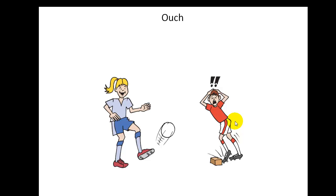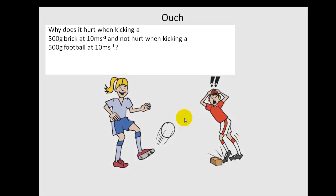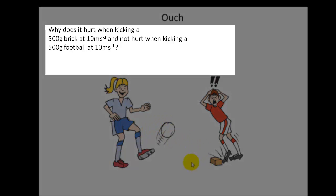Here we have an example of the importance of impulse. Now we have these two situations which are the same. The girl is kicking the ball. The ball leaves the foot at 10 meters per second, and the brick leaves his foot at 10 meters per second. They are the same mass and they leave at the same speed. Yet it will hurt the boy and not hurt the girl. Why is that? Well, this is to do with change of momentum, with impulse and the force that can be derived from that.